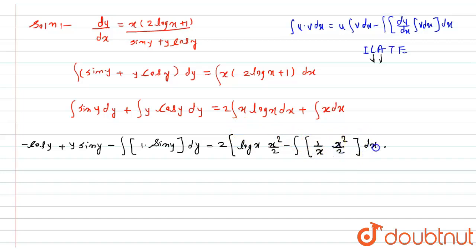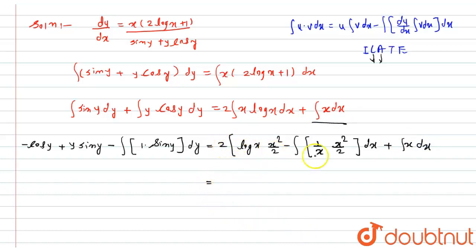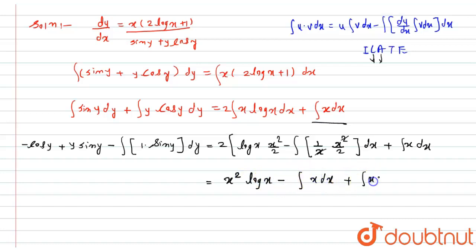Plus integration of x dx. Opening this out: the 2 and 2 cancel, and the x and 1/x cancel, giving x²·log(x) minus integration of x dx plus integration of x dx.